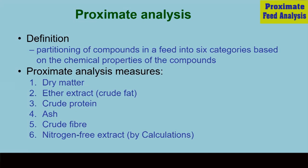We can determine dry matter, then ether extract or fat content, that's crude fat, then crude protein, crude fiber, and ash. These five are determined by this proximate analysis.